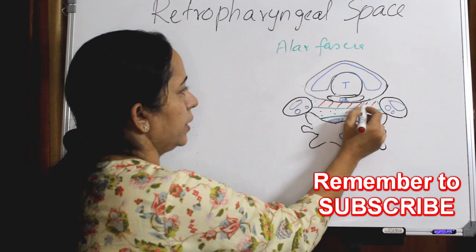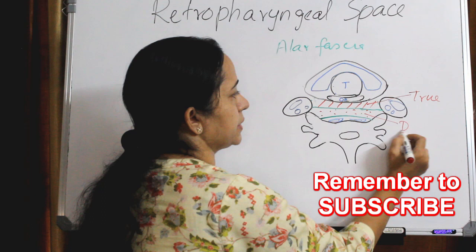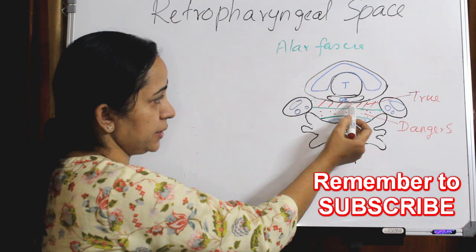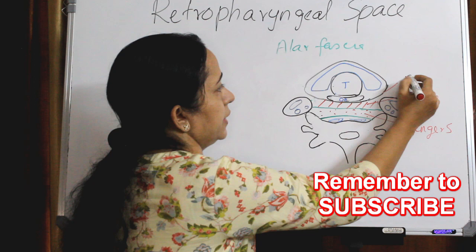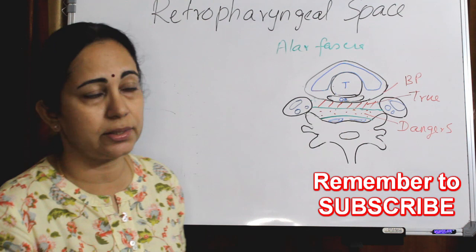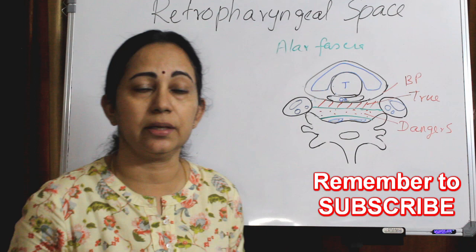So there is a true retropharyngeal space and a dangerous space. The boundaries are: anteriorly the pharynx and esophagus covered by the visceral fascia — the buccopharyngeal fascia; posteriorly the prevertebral fascia; and laterally on both sides the carotid sheath. The alar fascia divides the retropharyngeal space into the true retropharyngeal space, which is anteriorly placed, and the dangerous space posteriorly.